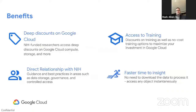From a benefit standpoint, when you sign on to the Strides program, the first benefit most people realize is deep discounts on Google Cloud. I can verbally say there is a 25% discount on compute and storage. The 25% discount on compute applies to all compute resources, including GPUs. So if you have high compute needs, those discounts are there, provided to you via Google Cloud from NIH — to get more research for your dollar and accelerate biomedical discovery.